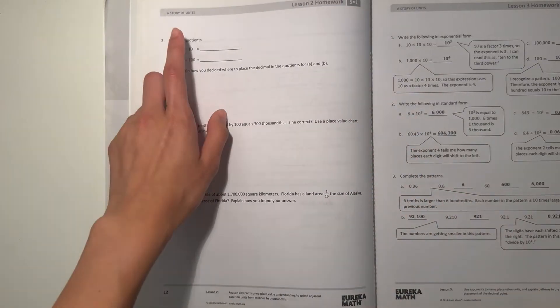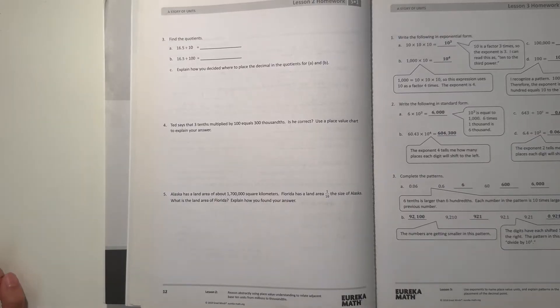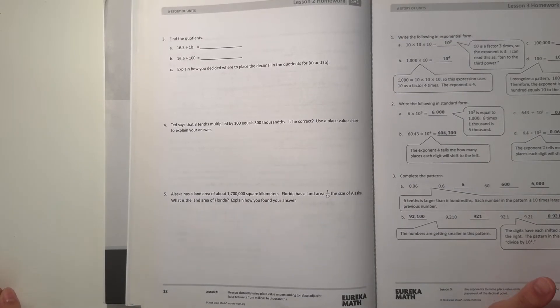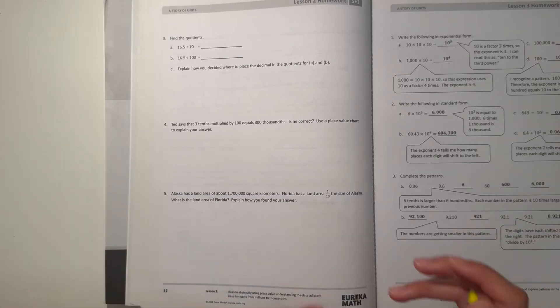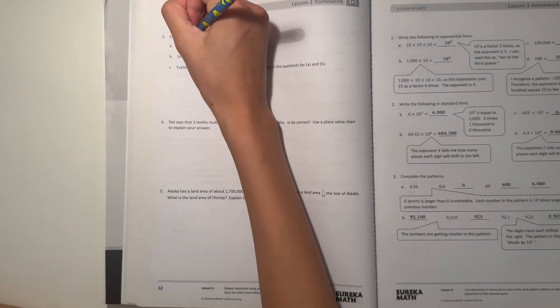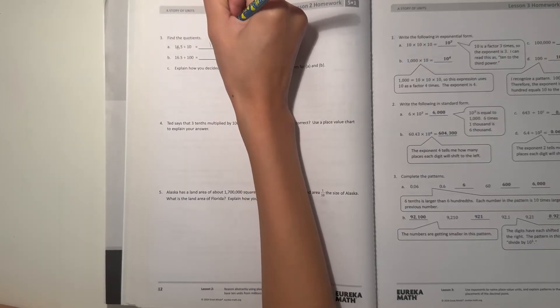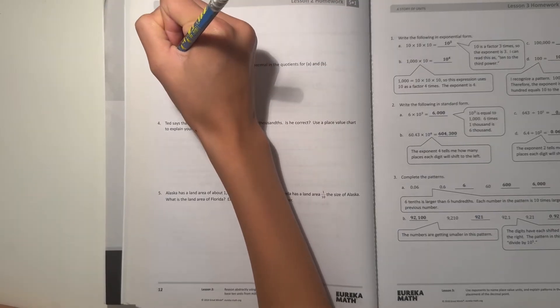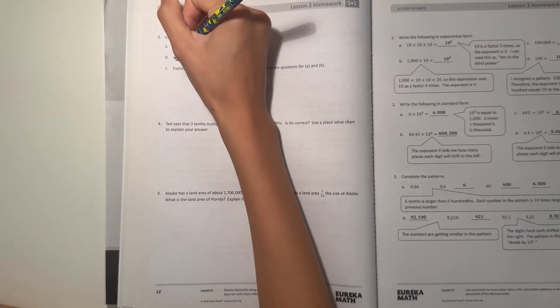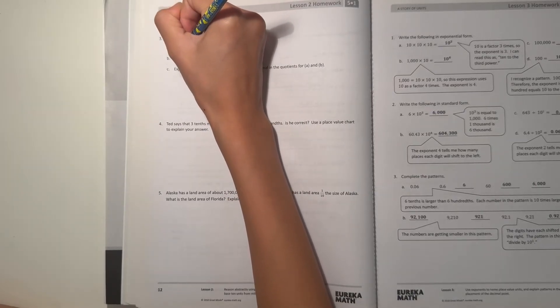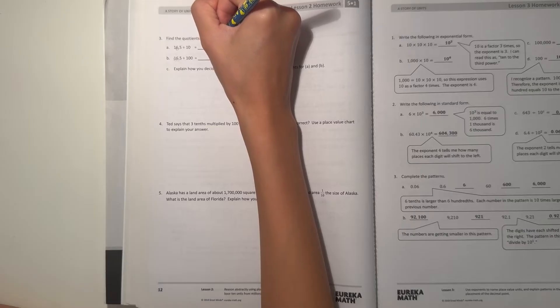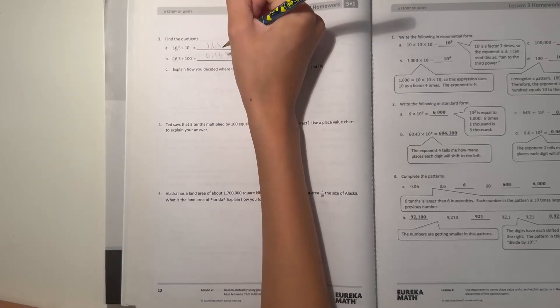Number three, find the quotient. So A, 16.5 divided by 10. So divided by 10, we're moving the decimal point one to the left. So that would be 1.65. And 16.5 divided by 100 would be moving it two places to the left, so that would be 1, 2. So that would be 0.165.